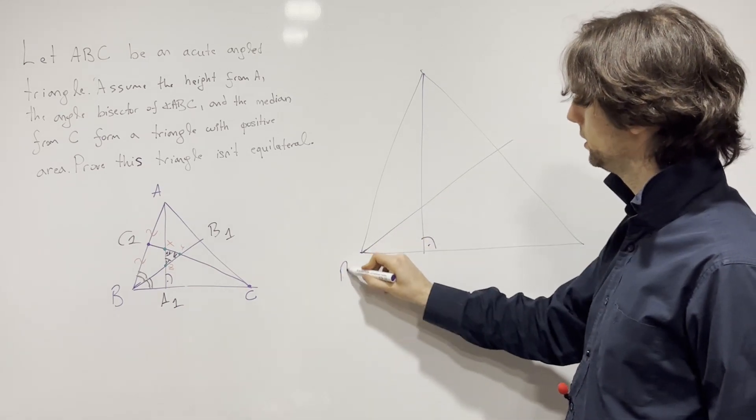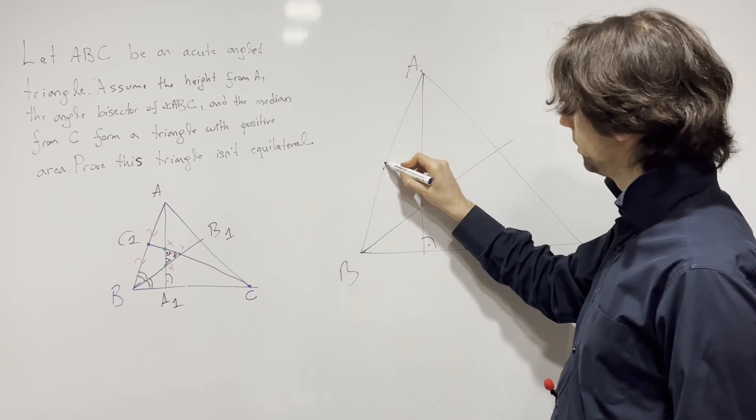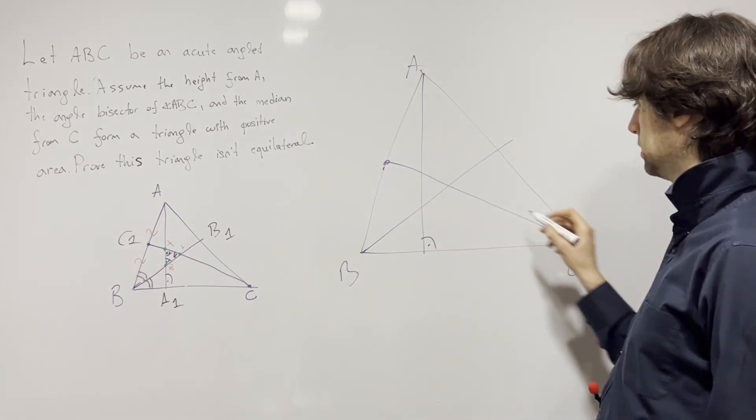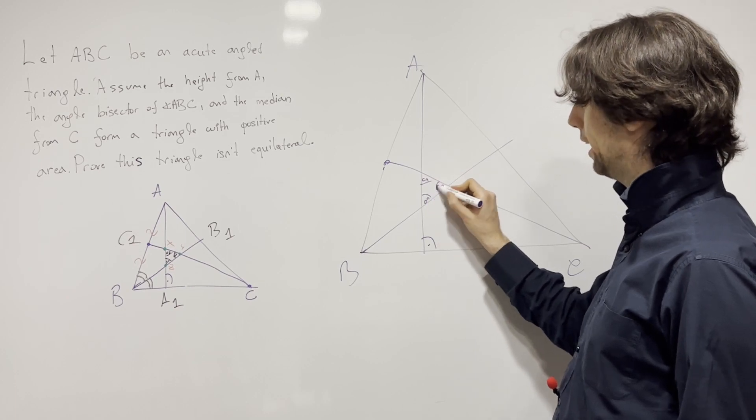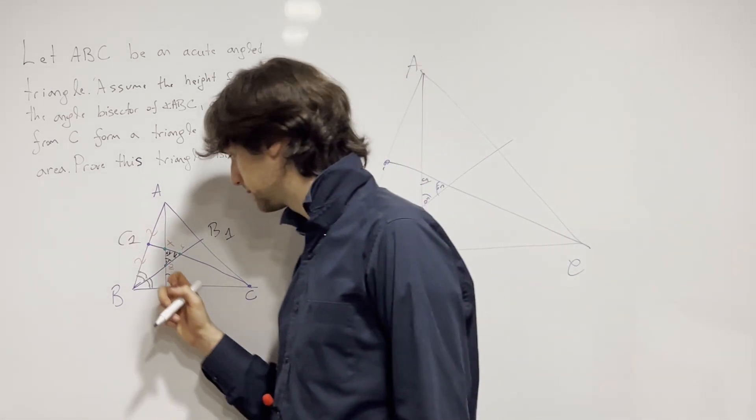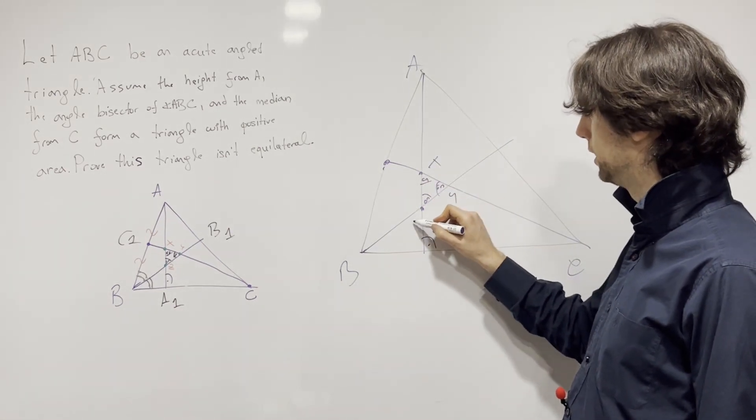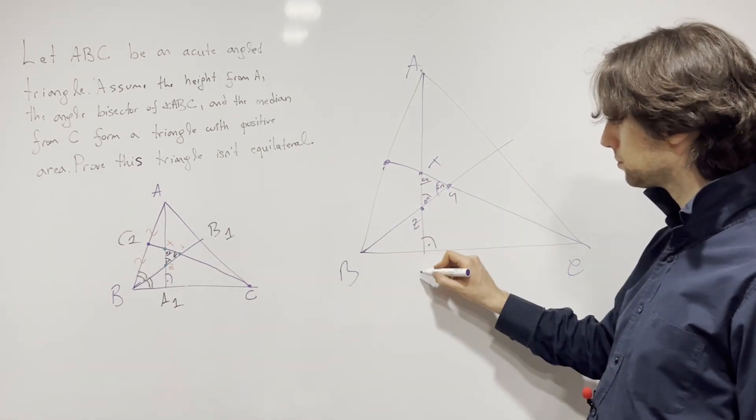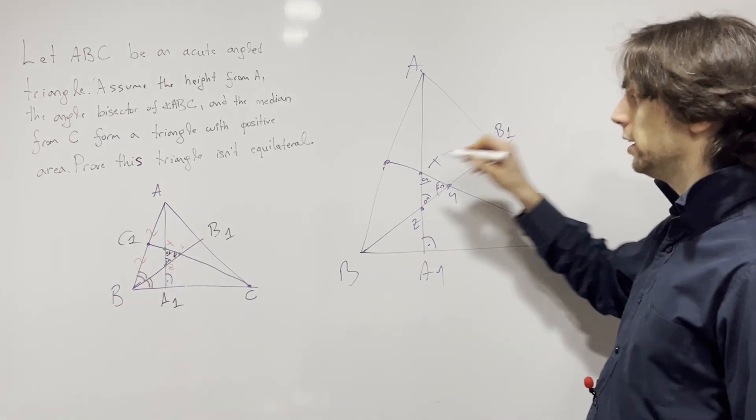Or if we draw a bigger diagram, we're going to have that this triangle: the height from A, angle bisector of ABC, and here the midpoint, say that this triangle they formed XYZ actually has the angles that are 60, 60, 60.